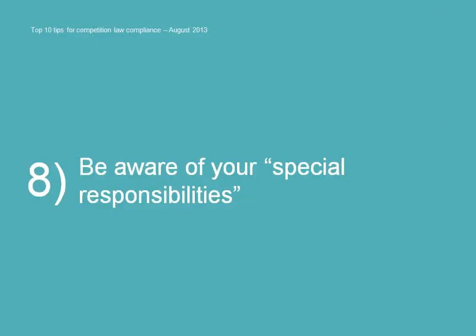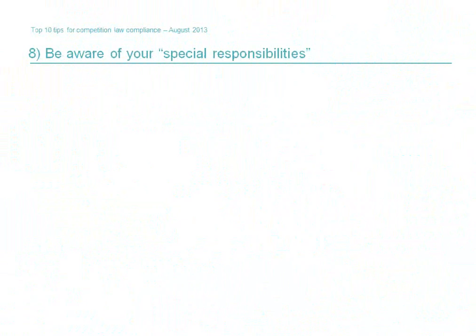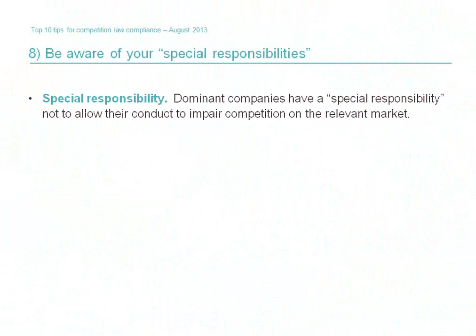Tip number eight: be aware of your special responsibilities. Companies with significant market power — those which could be dominant for the purposes of competition law — will be subject to a special responsibility not to impair the process of competition. Conduct which would otherwise be perfectly legal for a non-dominant company may well give rise to competition risk if you are considered to be dominant. A dominant company is broadly one which is considered to be able to behave independently of its competitors, suppliers and customers. If you suspect you may have a market share of more than 40% in a relevant economic market, you may want to consider what extra precautions to take to minimise competition risk.